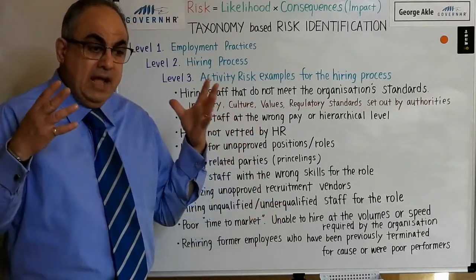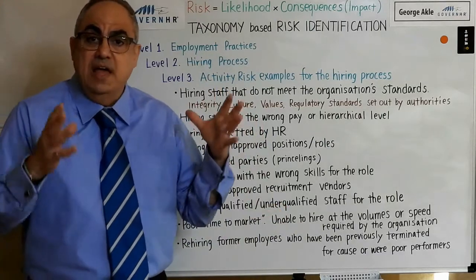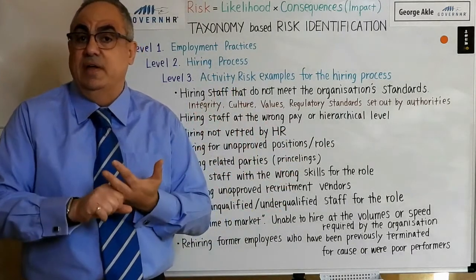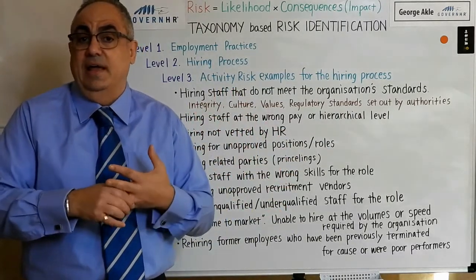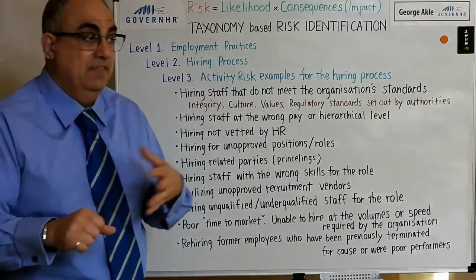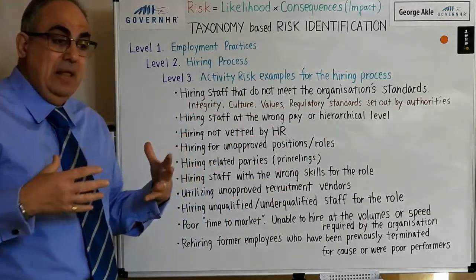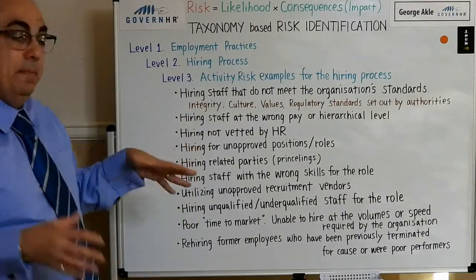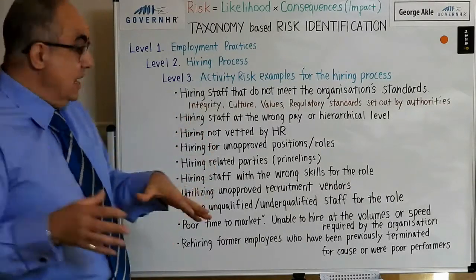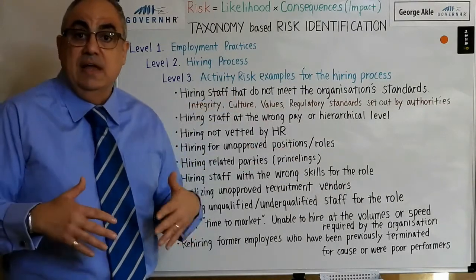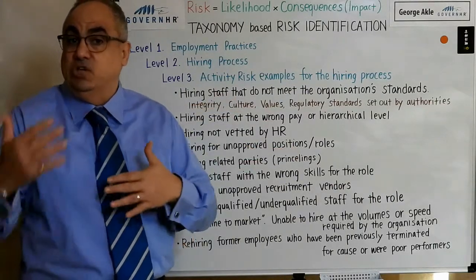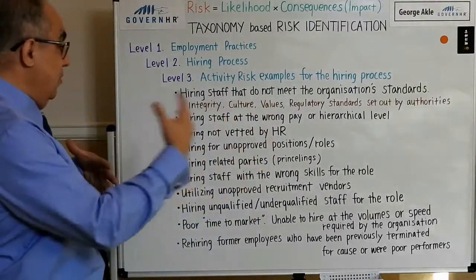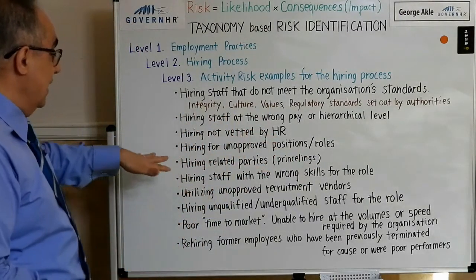Hiring for unapproved positions or roles is a key risk. Good discipline means having targets and budgets — not just financial, but also from a headcount and FTE perspective. People should only hire for open, approved positions, and look internally first to see if someone internal can fill a role before going external.